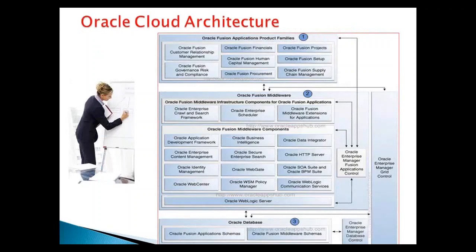The cloud architecture of Oracle is a three-tier architecture. In the first tier, we have the applications - HCM family, CRM family, Supply Chain family, GRC - these are all the various product application families. In the second layer, we have the fusion middleware. Middleware is the backbone for the SaaS, consisting of servers like Oracle Web Center, HTTP server, enterprise content management, and business intelligence. And then as usual we have the database. This is the three-tier architecture of Oracle cloud.